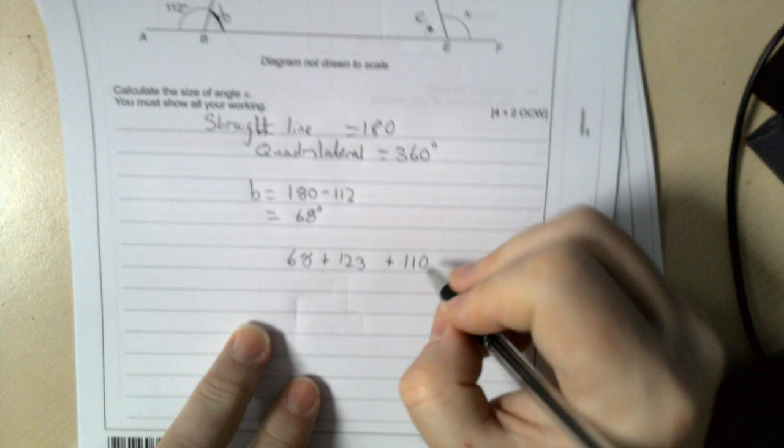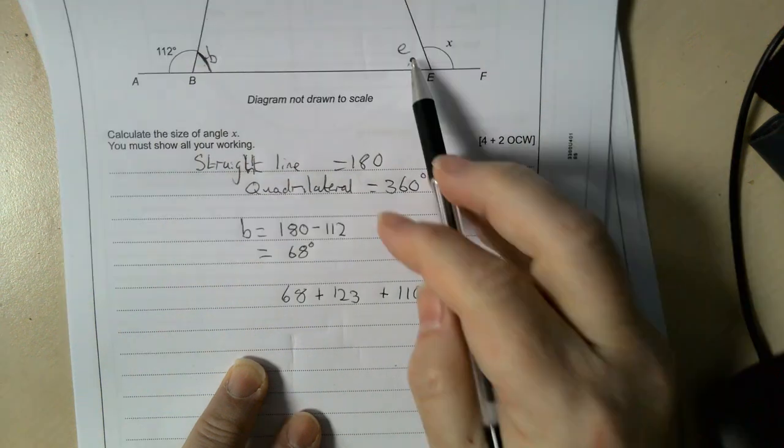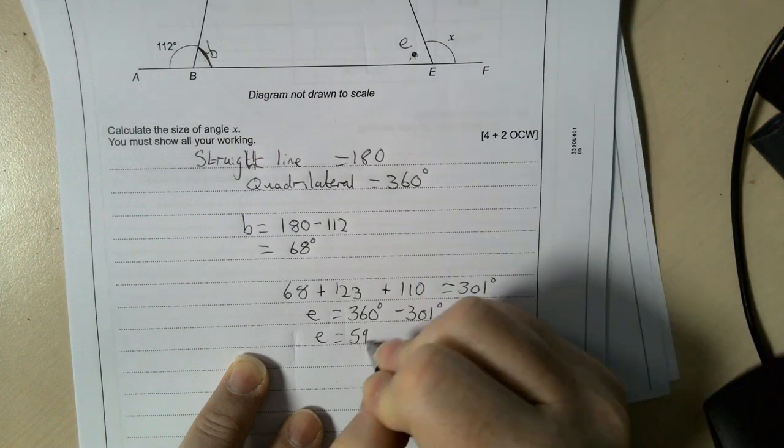So I got 68 plus 110 plus 123 degrees. So the missing letter E on the inside is going to be 360 degrees take away 301 degrees.